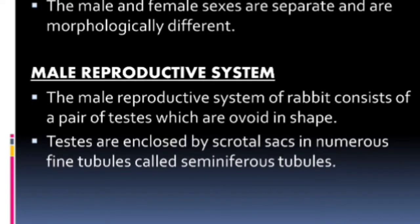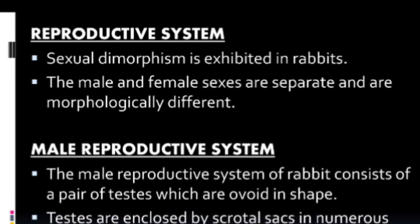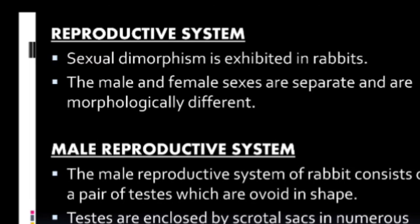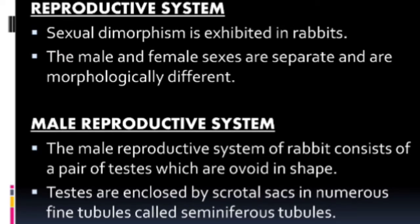Now, reproductive system of rabbit. Sexual dimorphism is exhibited in rabbit. What is sexual dimorphism? Sexual dimorphism means the male and female sexes are externally different in appearance. We can differentiate and find out the difference between male and female based on their external morphological features.